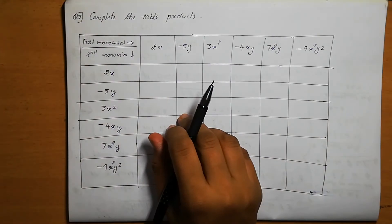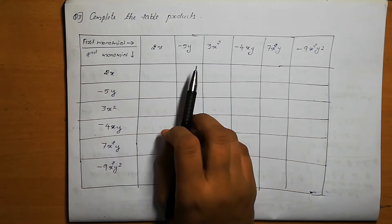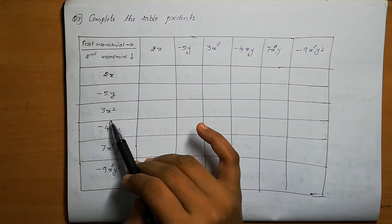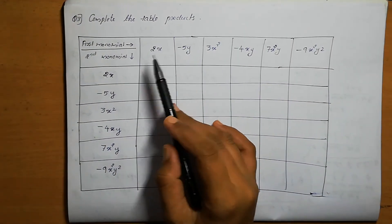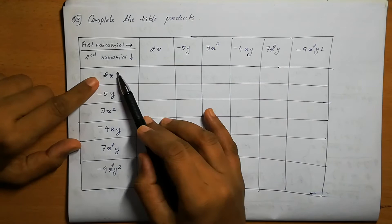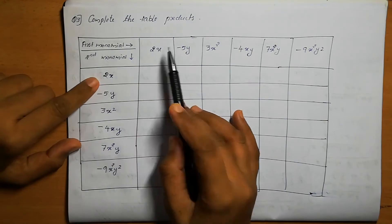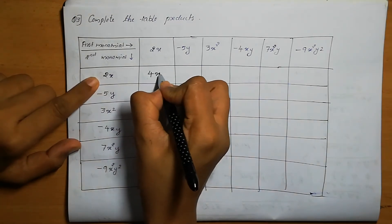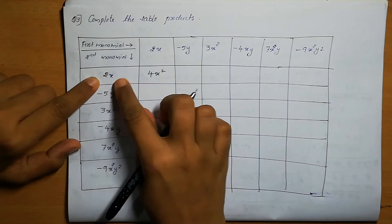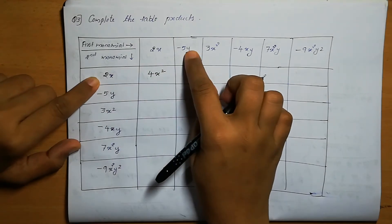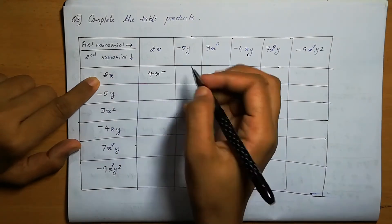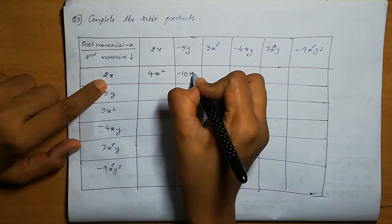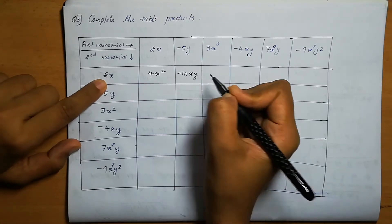Question number 3: Complete the table of products. This is the first monomial and this is the second monomial. Product means just multiply. 2x into 2x: 2 into 2 is 4, x into x is x square. Next: 2x into minus 5y — 2 into minus 5 is minus 10, x into y is xy.